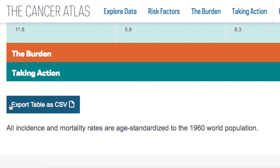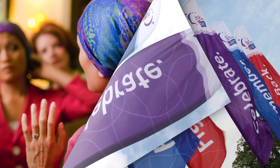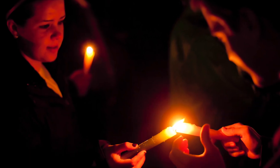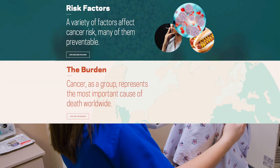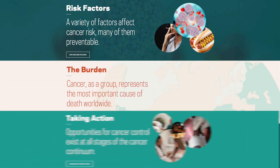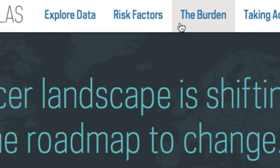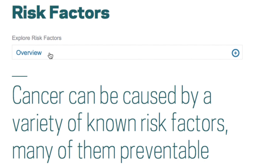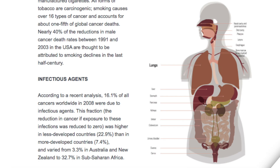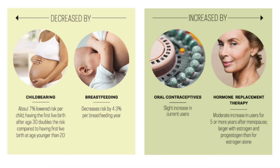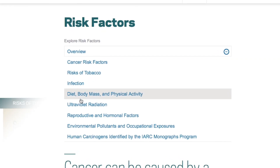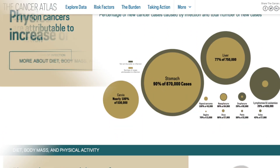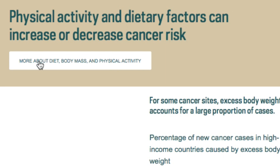Users can then export the table they create as a CSV file. The Cancer Atlas also carefully examines all aspects of the cancer equation in sections titled Risk Factors, The Burden, and Taking Action. On the website, each section includes a highly scannable overview with visual-rich subsections. You can select a specific topic from the drop-down menu at the top or scroll through each section and click the More button underneath each headline.